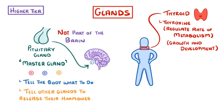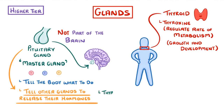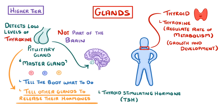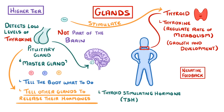Do you remember how earlier we said that the pituitary gland releases hormones that influence other glands? Well, an example of this is thyroid stimulating hormone, or TSH. If the pituitary gland detects low levels of thyroxine, then it will release TSH, which stimulates the thyroid to produce more thyroxine, which will bring the level of thyroxine back up to normal. We call this process negative feedback, because if thyroxine levels are too low, they're stimulated to rise again, and if they went too high, they'd be brought back down.